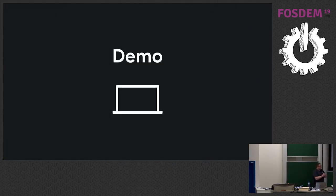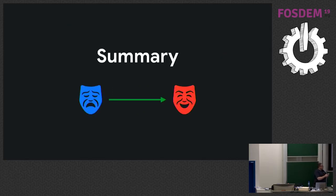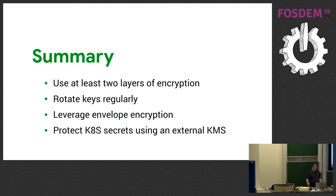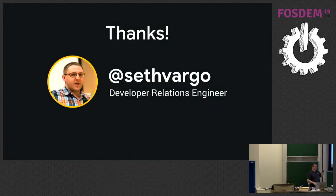To conclude: Kubernetes can take us from sad to happy with respect to secrets management. Use at least two layers of encryption — application layer and hardware layer. Rotate your keys regularly. Leverage envelope encryption — it's the fastest and most scalable way to do data encryption we have today. And protect Kubernetes secrets using an external KMS provider, whether that's a cloud provider or something like HashiCorp Vault. Thank you.